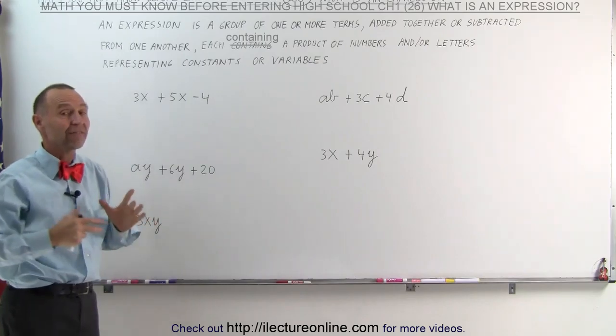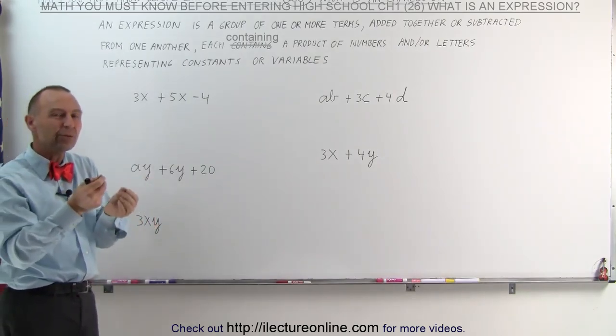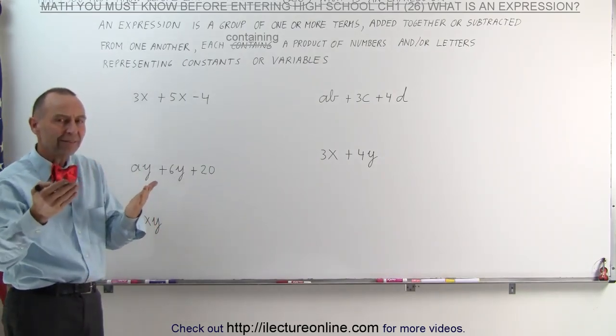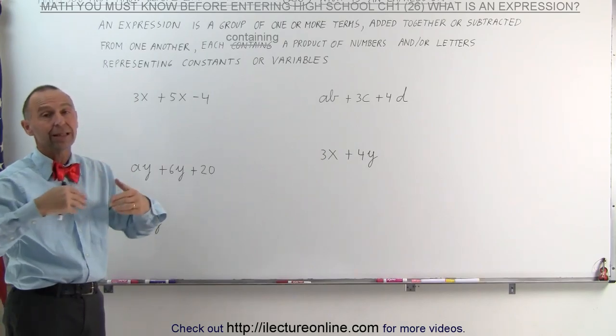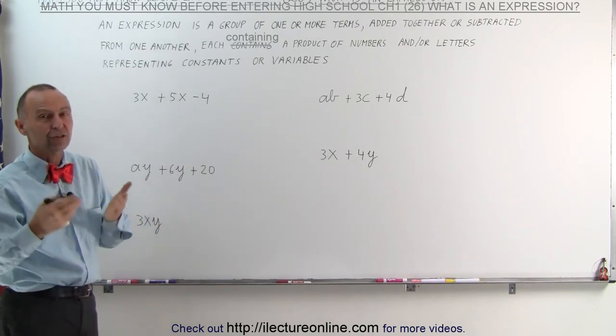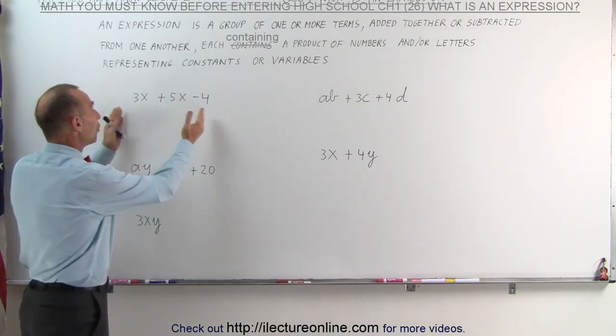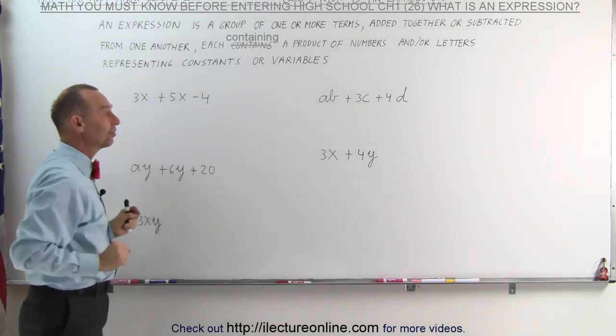Notice that none of these expressions have equal signs. Whenever there's an equal sign, there will be a left side, a right side, an equal sign in the middle. That means you have an equation. An expression is not an equation. It's simply a group of terms with no equal sign.